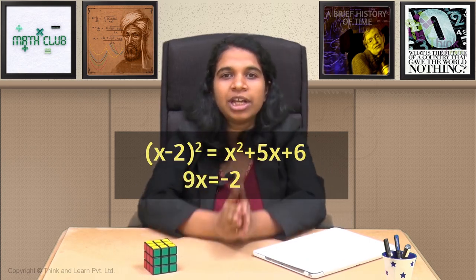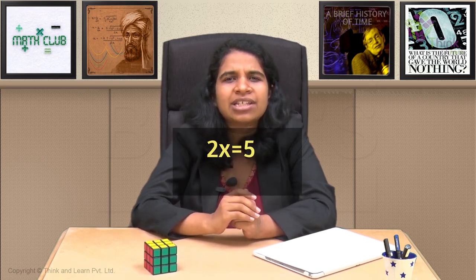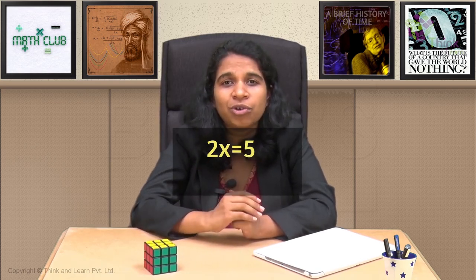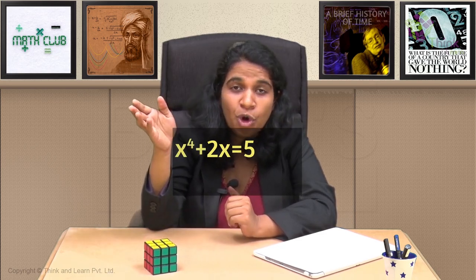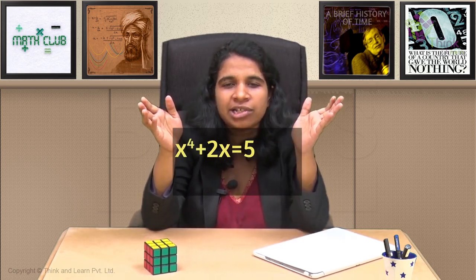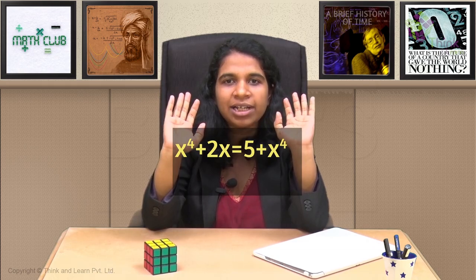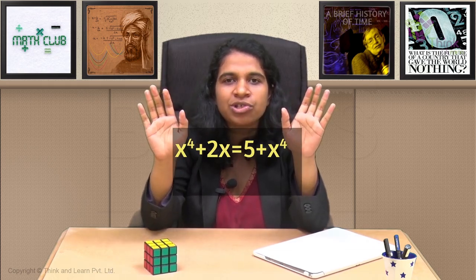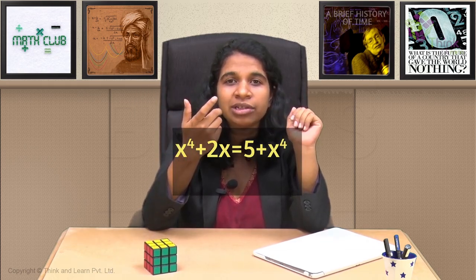Because otherwise we can do magic. You can take any equation and convert it to any degree that you feel like, right? Let's say you give me 2x equal to 5. I'll happily add an x raised to 4 on both sides. I like the number 4. I want the degree to be 4. So I'll write x raised to 4 plus 2x here and make this 5 plus x raised to 4. Perfectly correct mathematically. I'm just adding x raised to 4 on both sides. But what have I done by doing this? I've actually made the degree 4.